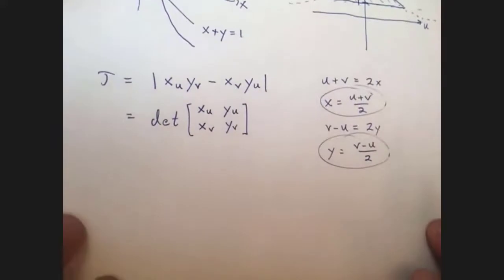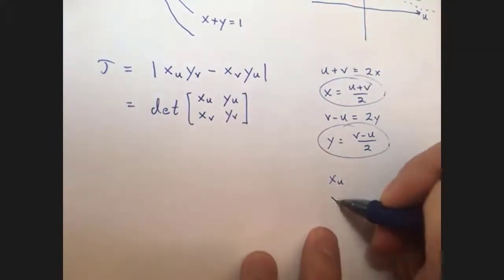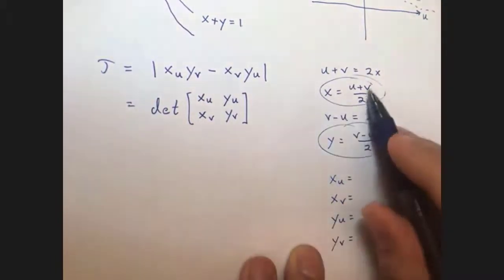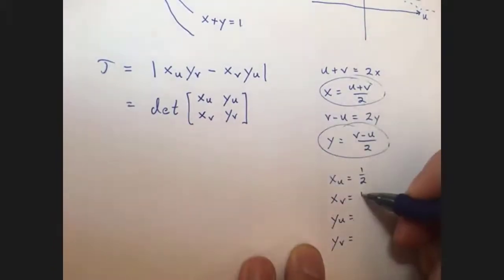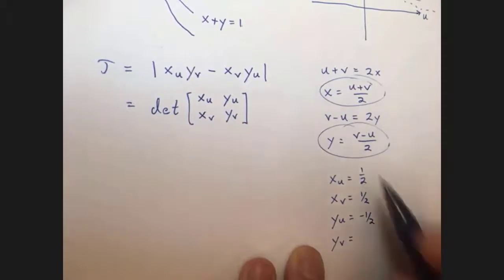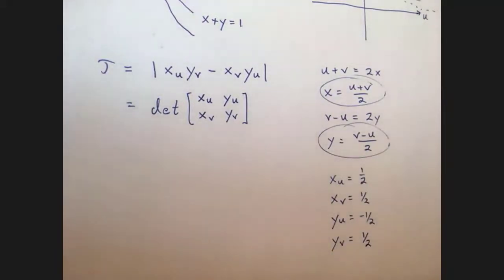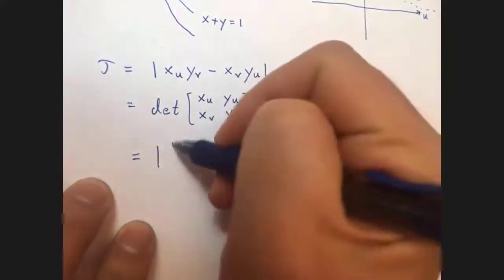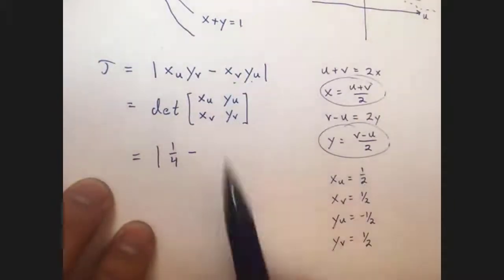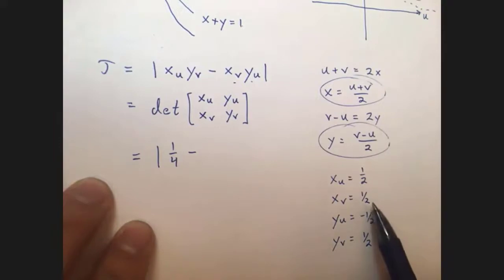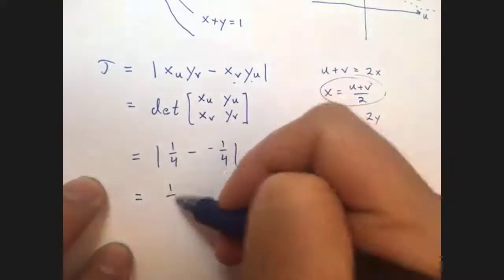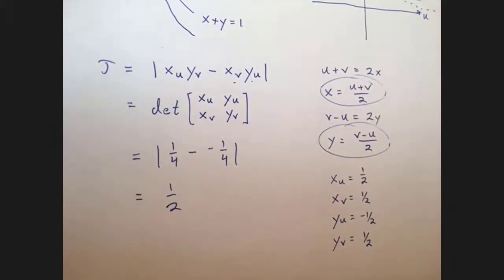Now I can compute all the needed partial derivatives. The derivative of x with respect to u is 1/2, x with respect to v is 1/2, y with respect to u is negative 1/2, and y with respect to v is 1/2. Plugging into the Jacobian formula: x_u times y_v equals 1/2 times 1/2 equals 1/4, and x_v times y_u equals 1/2 times negative 1/2 equals negative 1/4. So the Jacobian is 1/4 minus (negative 1/4) equals 1/2. That's a constant — super nice.